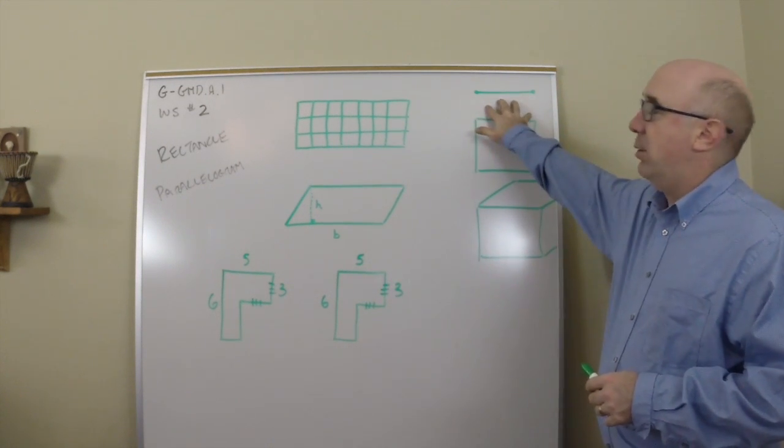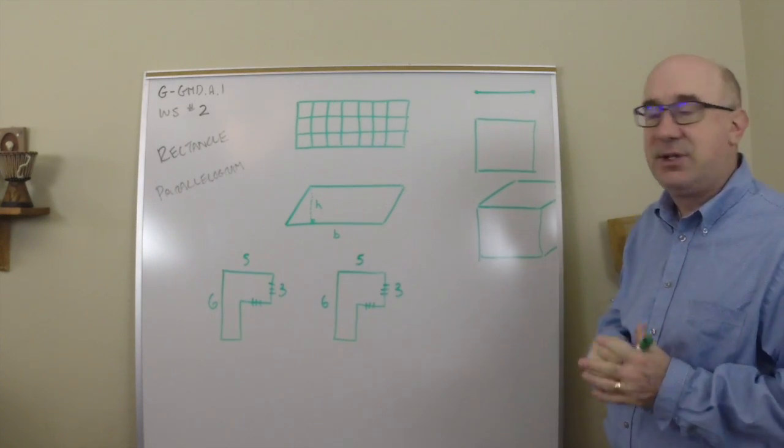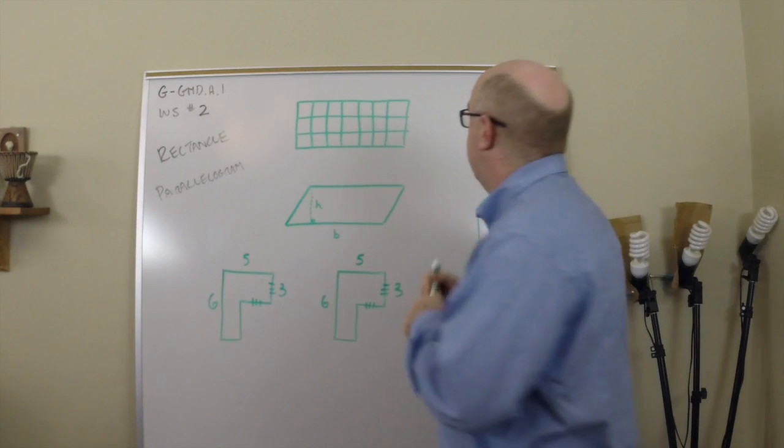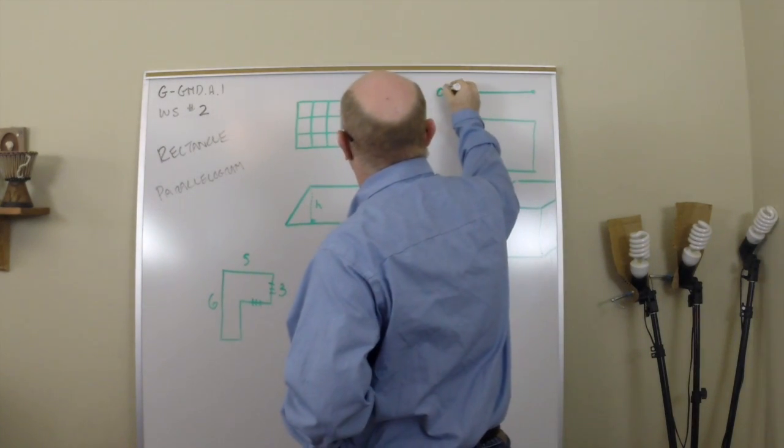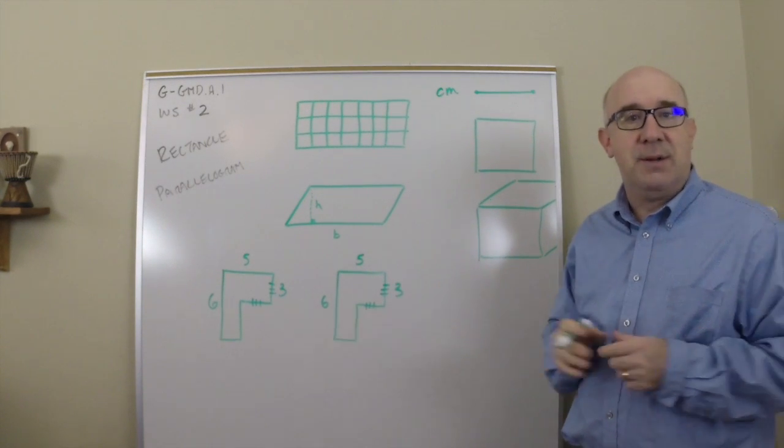So in perimeter, we measure a one dimension length, and so if we're measuring in units, centimeters, miles, whatever it is, it would be centimeters, because we're just saying how long something is.